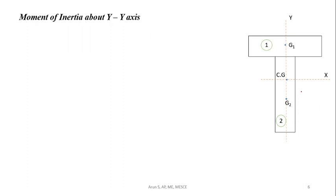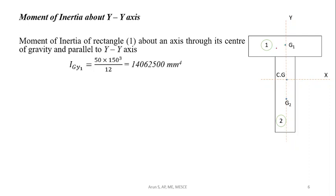Now we will find the moment of inertia about the YY axis. Since G1 and G2 lie on the same YY axis, we consider their individual centroidal moments. The moment of inertia of rectangle 1 about the YY axis passing through G1 is db³/12, which gives I_gy1 = 140,625,00 mm⁴.